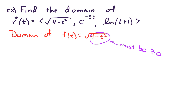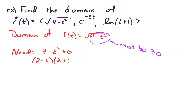So what we need is 4 minus t squared to be greater than or equal to zero. In other words, if we factor this, we need 2 minus t times 2 plus t to be greater than or equal to zero. If you remember your work from pre-calculus or calc 1, to figure out the set of values that solve this quadratic inequality, we need to make a sign chart.